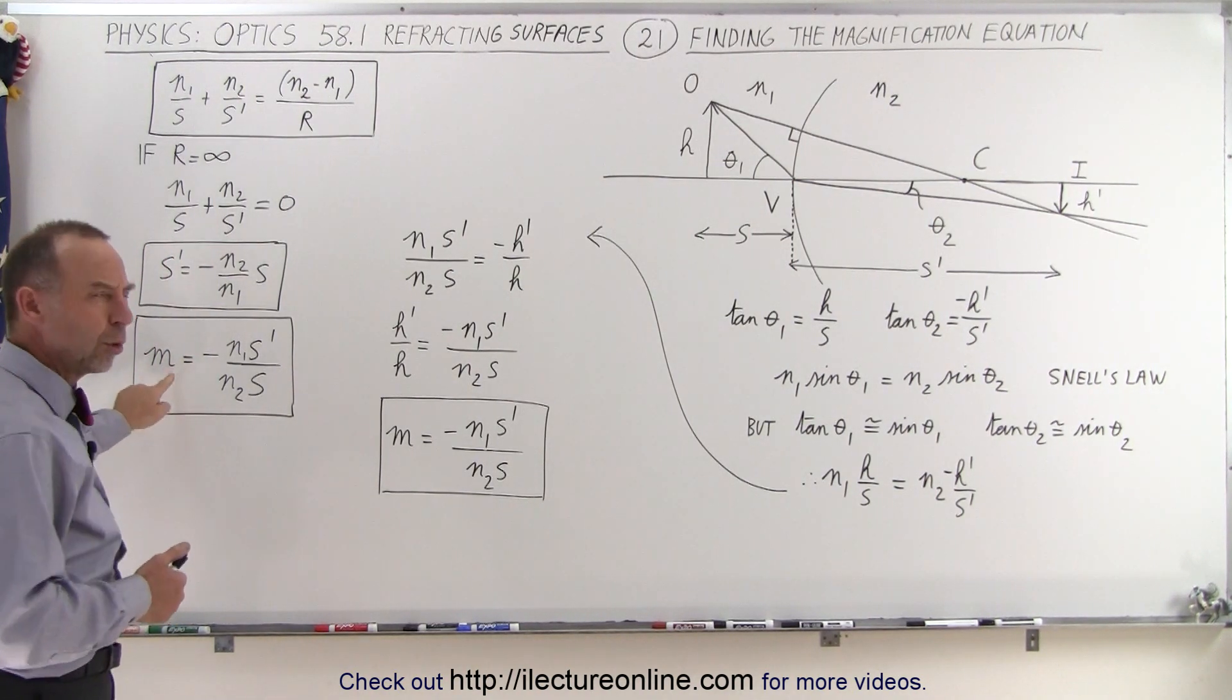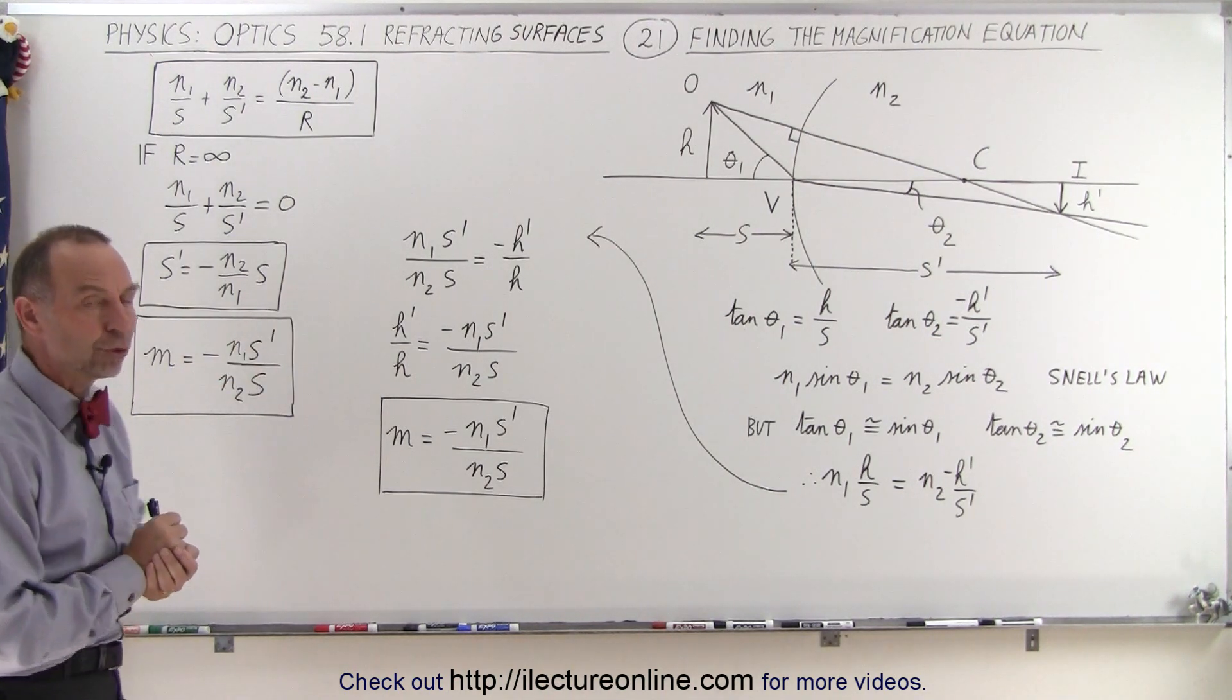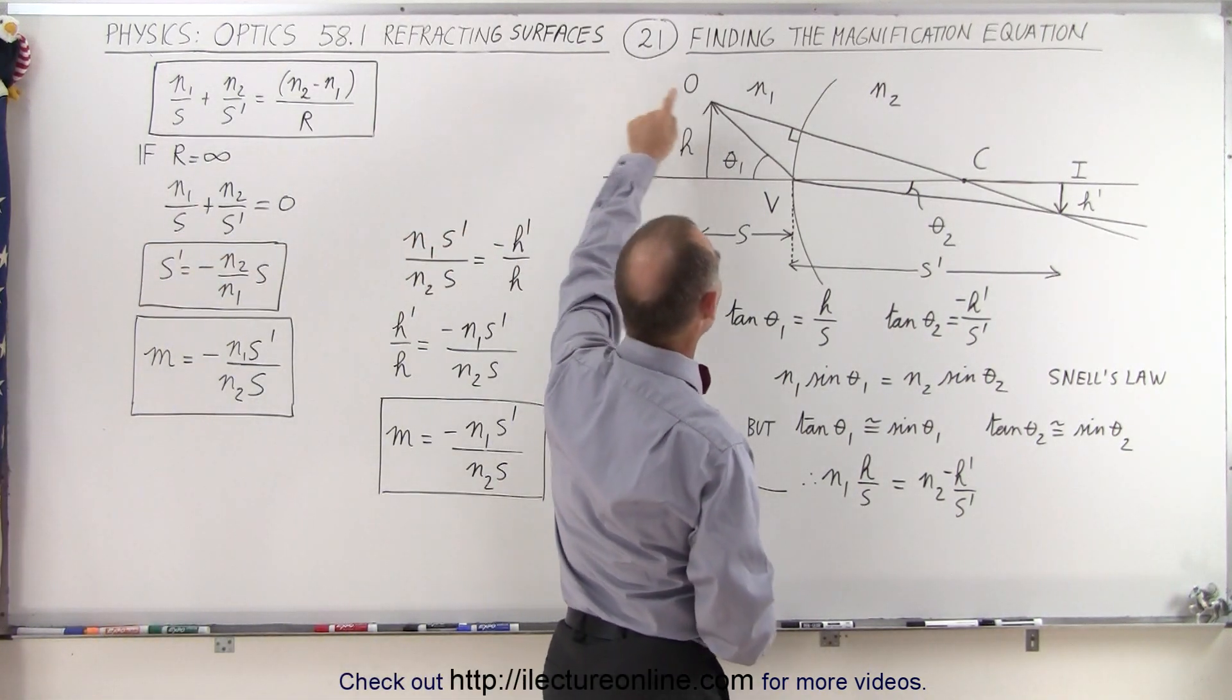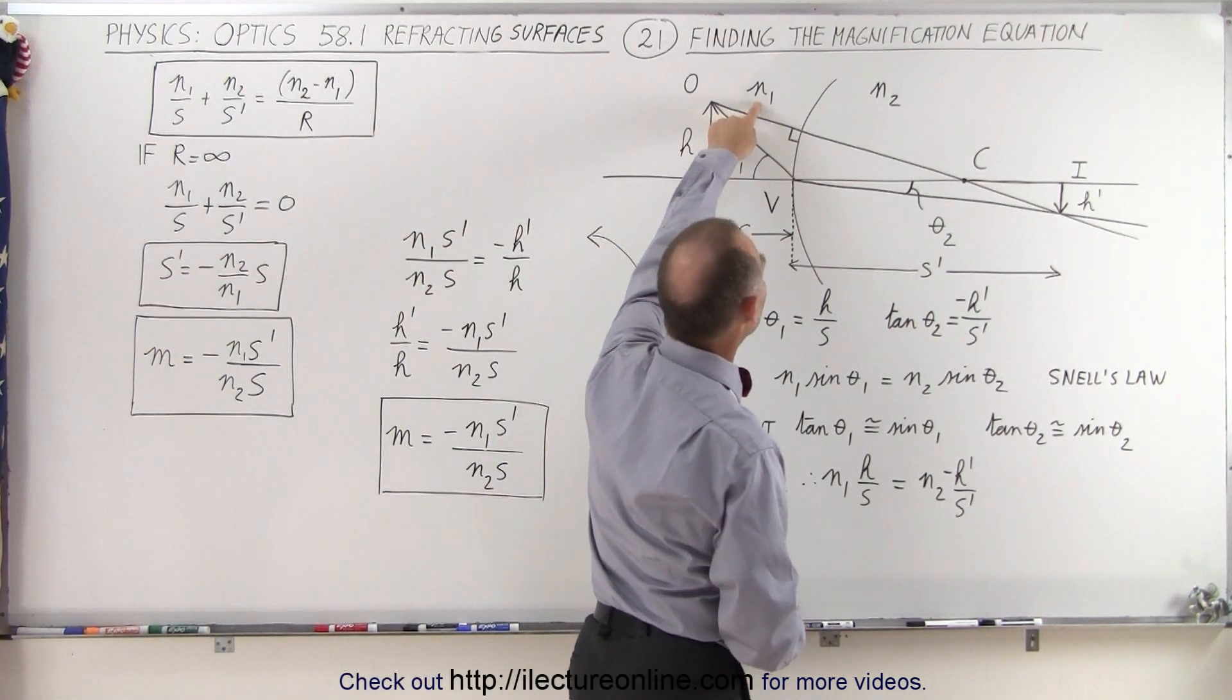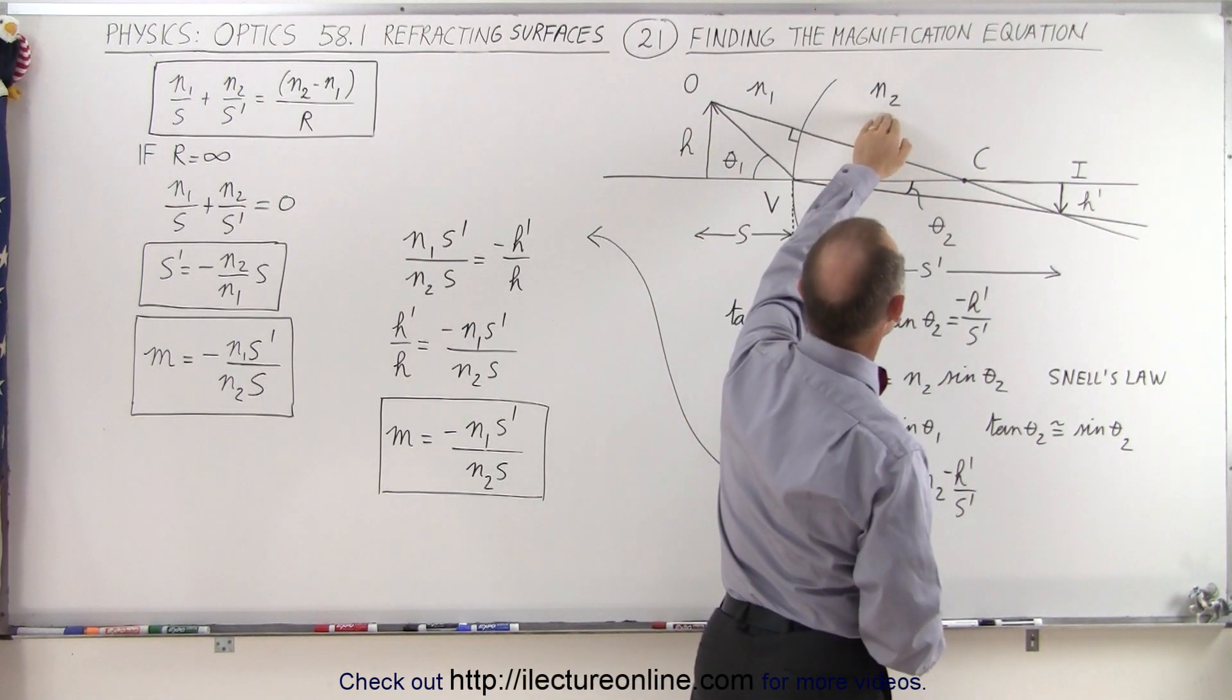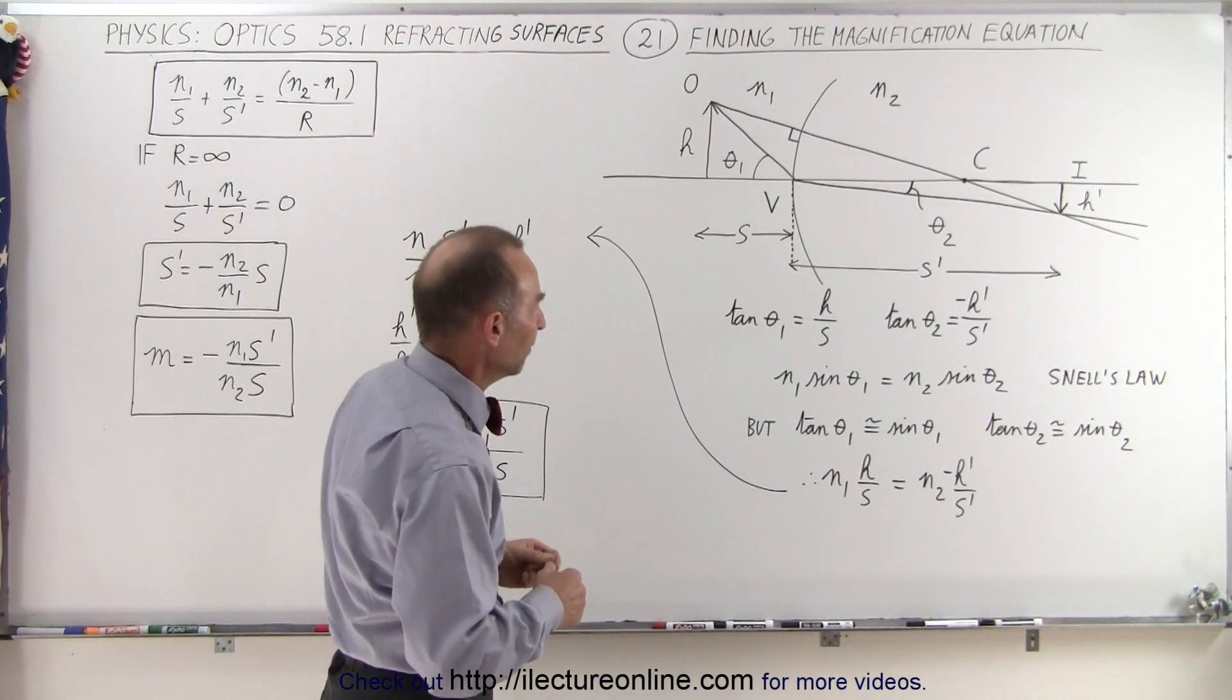Now the question is, where did that equation come from? And we can actually derive it, and here we have an example of how to do that. So let's say we have an object in this region right here that has an index of refraction N1. Let's say we have another side of the boundary here, we have the index of refraction N2, and we're going to assume that N2 is larger than N1.